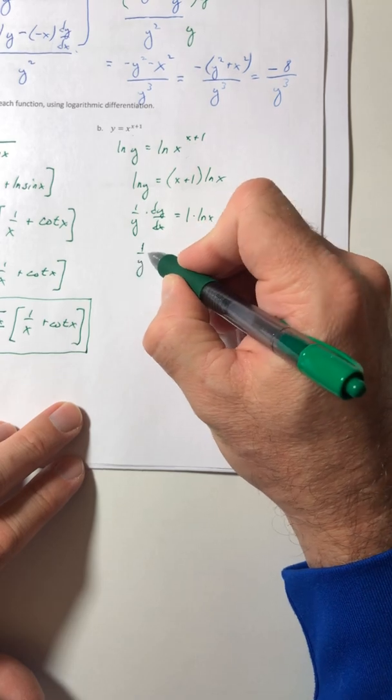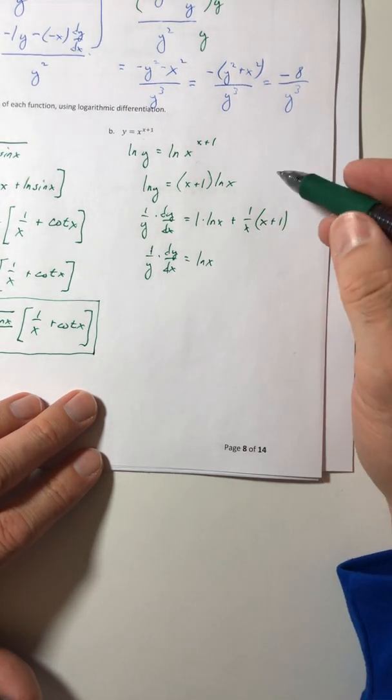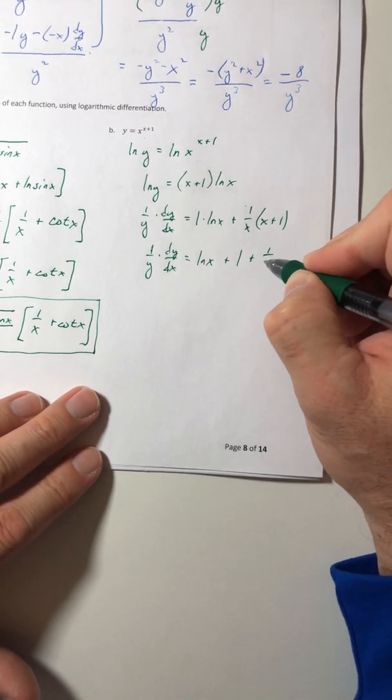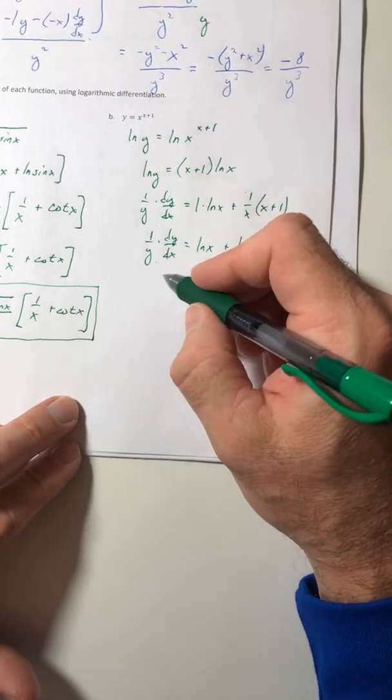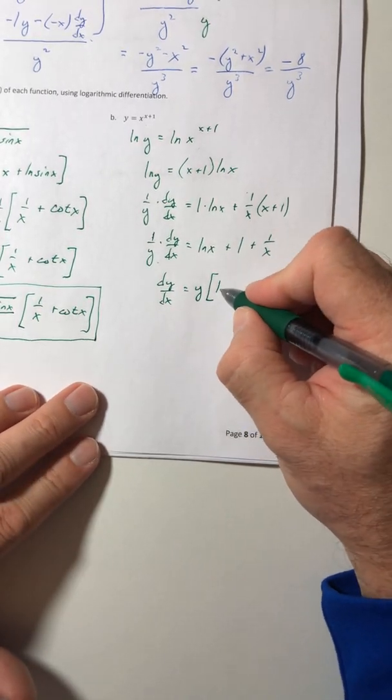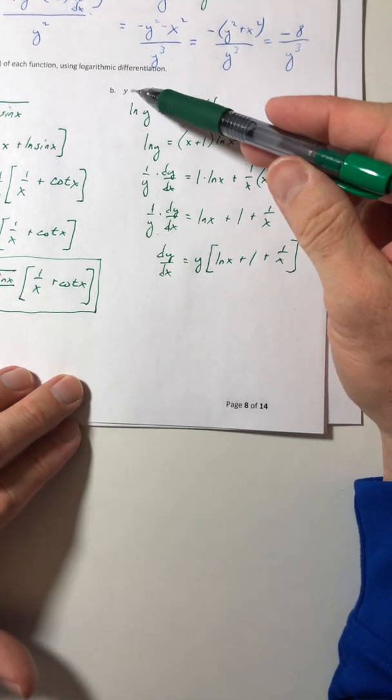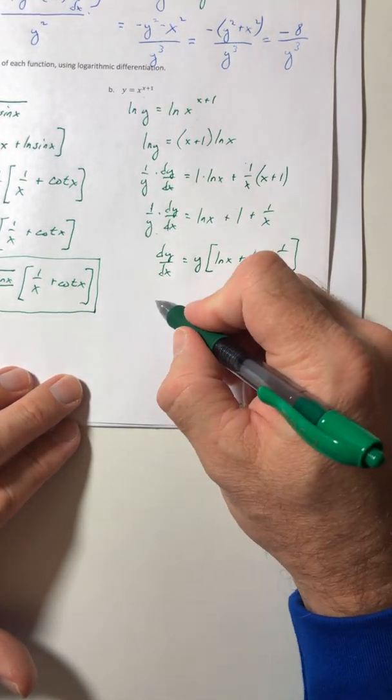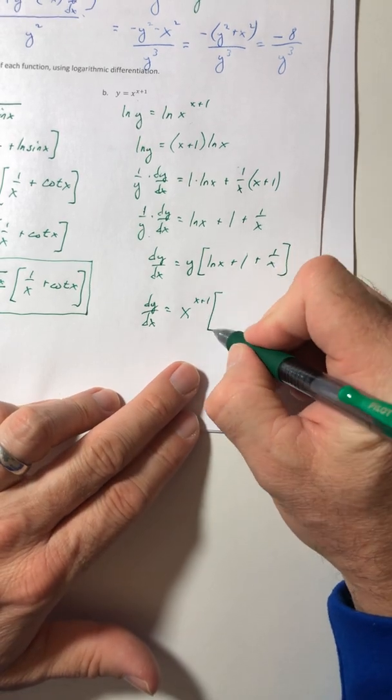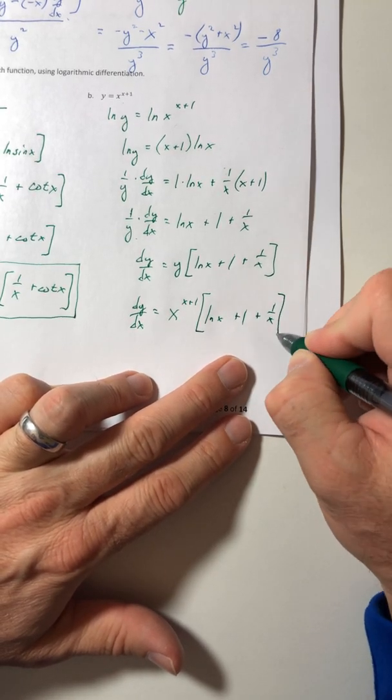So let's clean that up a little bit before we get the dy dx by itself, just so it's not so messy. So ln of x and this guy, let's go ahead and distribute that one across because that would just be one plus one over x. So swing the y over, multiply it out. And then switch the y back into terms of x. So your dy dx is going to equal x to the x plus one times the quantity ln of x plus one plus one over x.